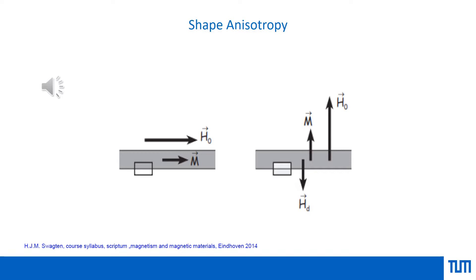In this example, you can see that the magnetization M is aligned along the needle direction and the field is applied along the needle direction. However, if the magnetization is aligned perpendicular to it, there is a demagnetization field Hd which creates an energy term — this is the reason behind the term that makes it unfavorable for magnetization to be perpendicular to the surface normal.